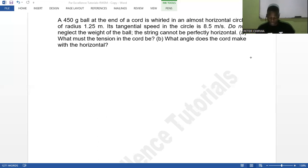Its tangential speed in the circle is 8.5 meters per second. Do not neglect the weight of the ball. The string cannot be perfectly horizontal. What must be the tension in the cord? What angle does the cord make with the horizontal?